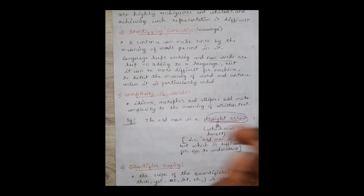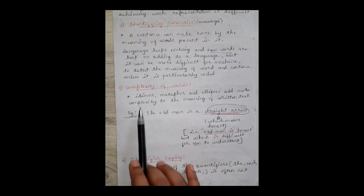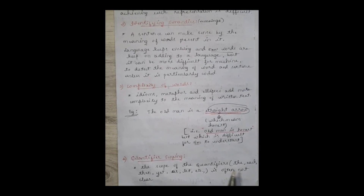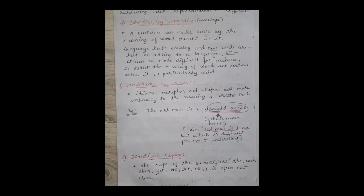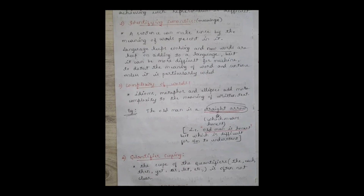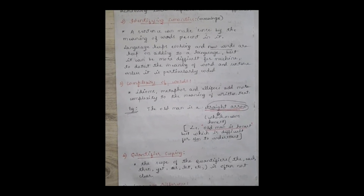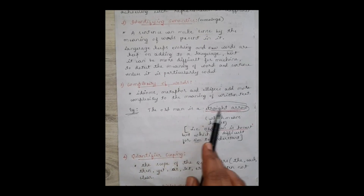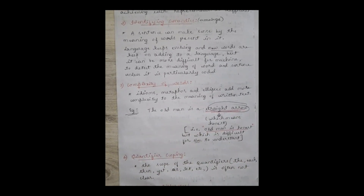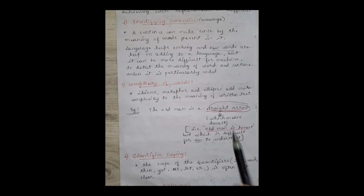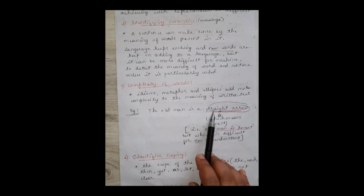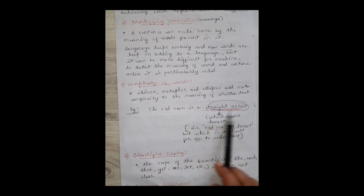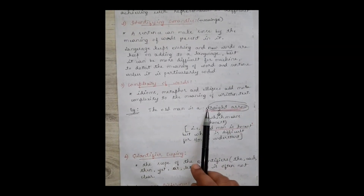The third challenge is the complexity of words — idioms, metaphors, or ellipses add more complexity to written text. I would suggest writing an example in your answers as it adds the most value. For example: 'The old man is a straight arrow.' The literal meaning of 'straight arrow' is an arrow that is straight, but in this sentence it means the person is honest and trustworthy. This is quite difficult for a machine to analyze.